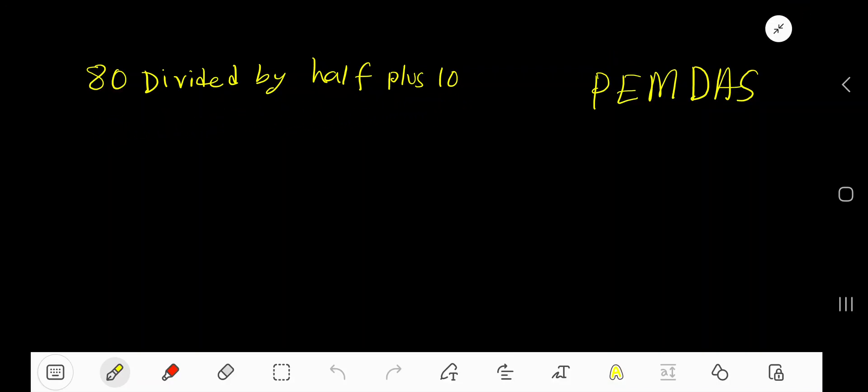80 divided by half plus 10. Let me translate this problem. 80 divided by half means 1 over 2, then plus 10.